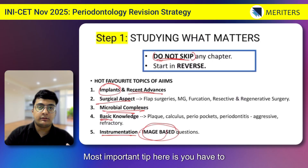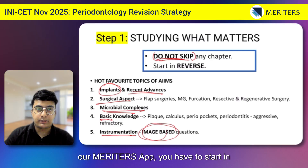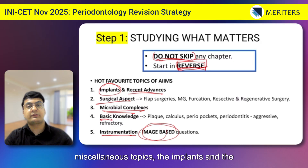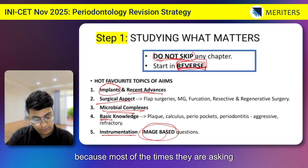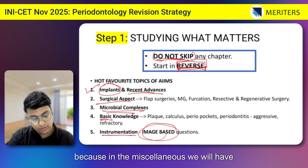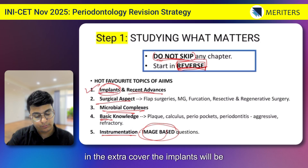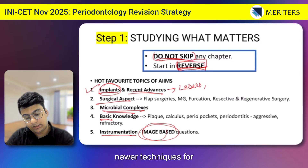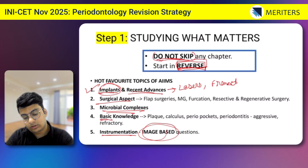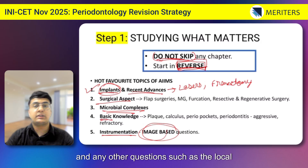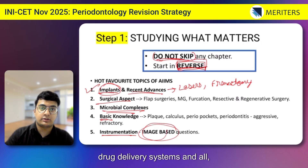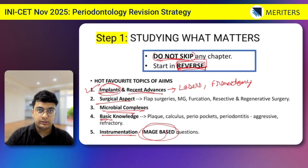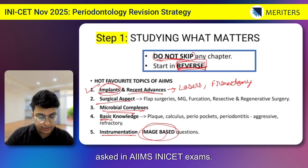The first most important tip is that when reading perio from the Meritors app, you have to start in reverse — that is, first start from the miscellaneous topics and implants, because most of the time questions are asked from these. In the miscellaneous section, implants will be covered, along with recent advances such as lasers and newer techniques for frenectomy. Other frequently asked questions include local and systemic drug delivery systems with doses of various agents like doxycycline and tetracycline.